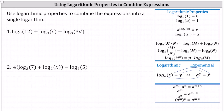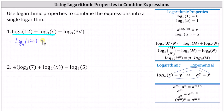Working from left to right, we begin by combining log base nine of 12 plus log base nine of C using the log property: log base A of M plus log base A of N equals log base A of the product of M and N. So we can write the sum of the first two logarithms as log base nine of 12C. And we still have minus log base nine of 3D.